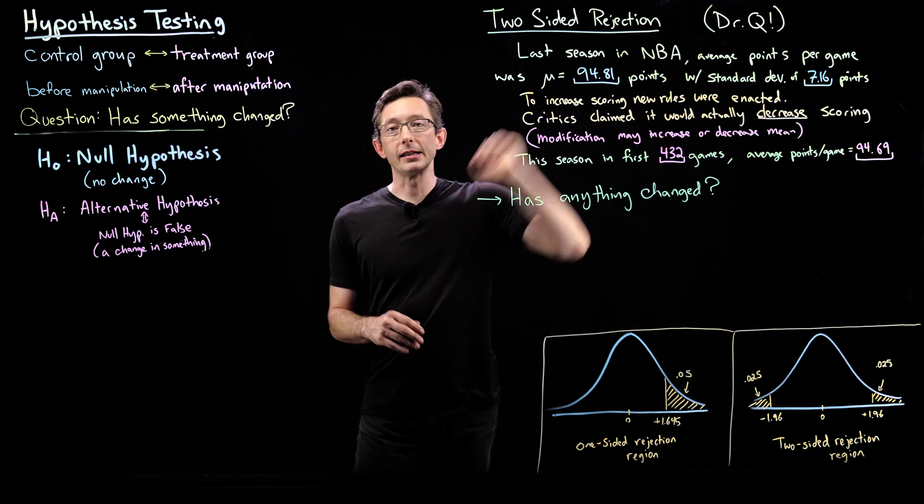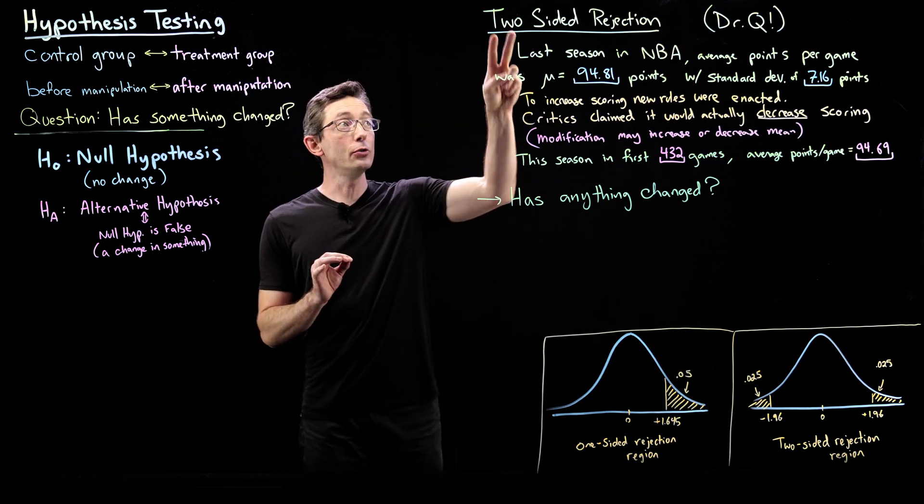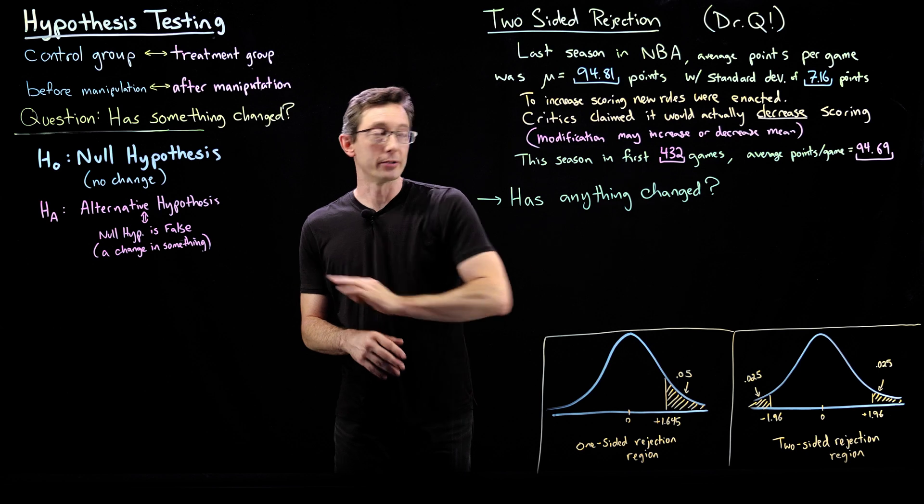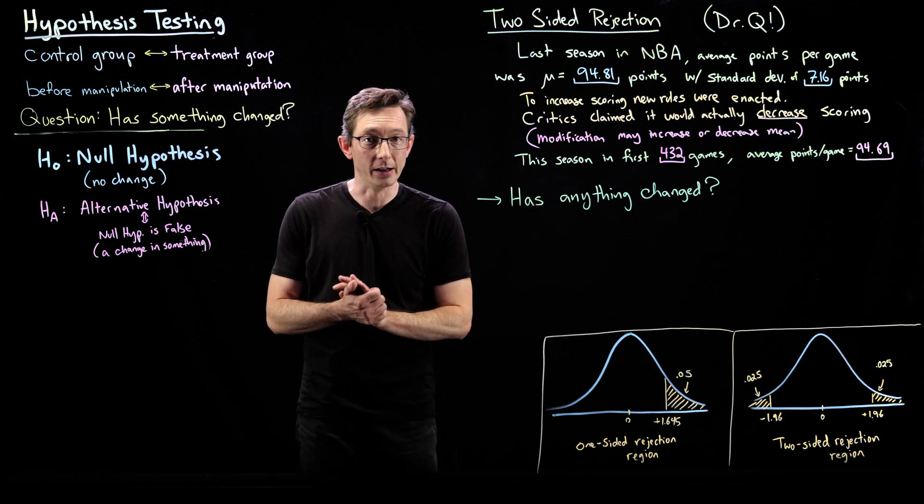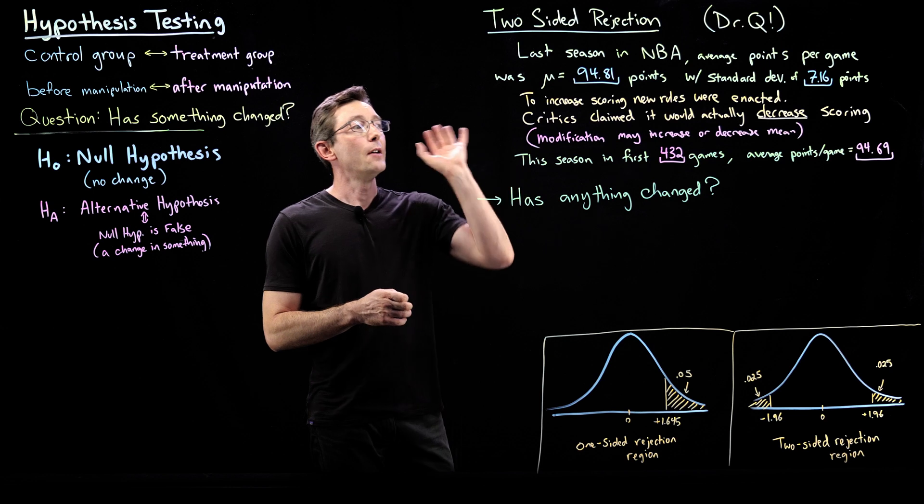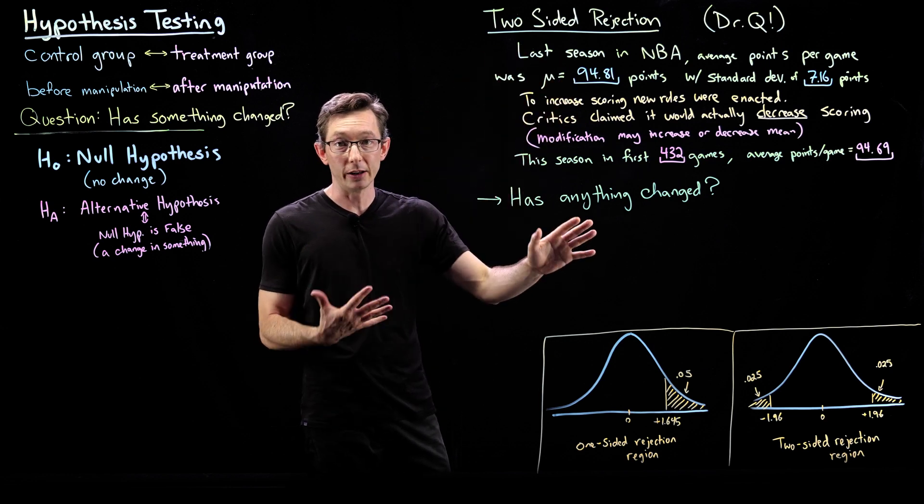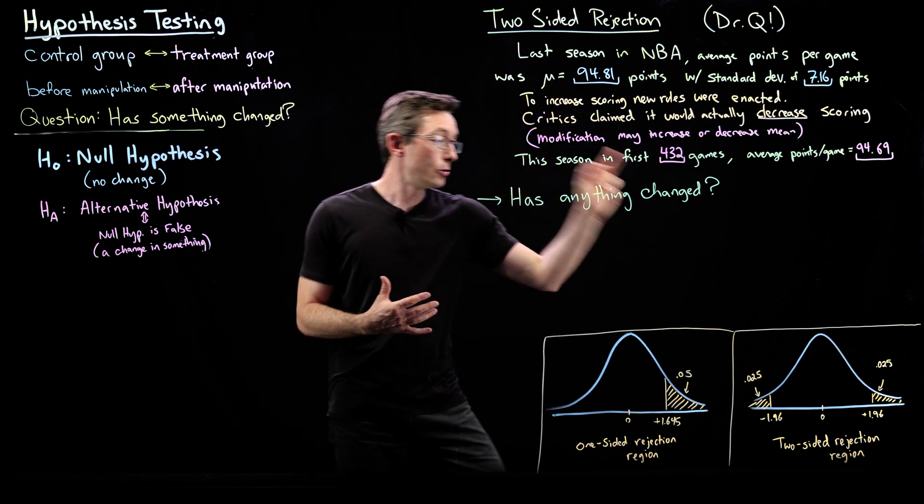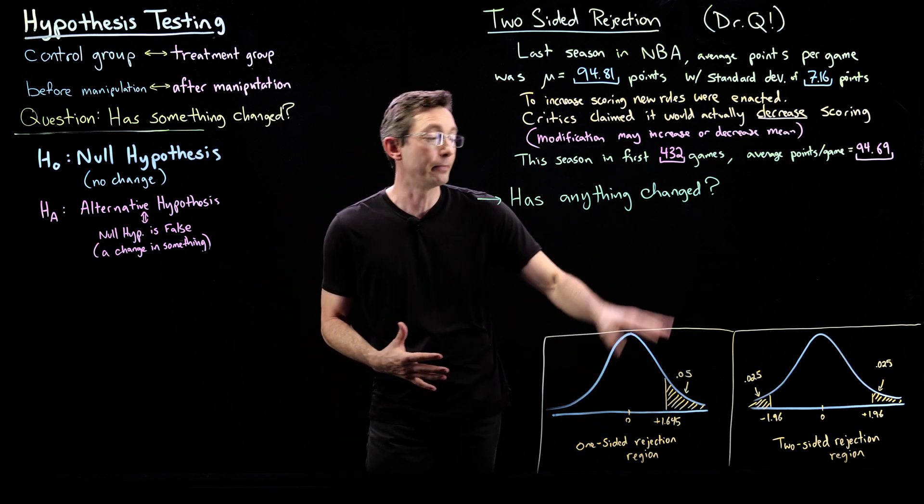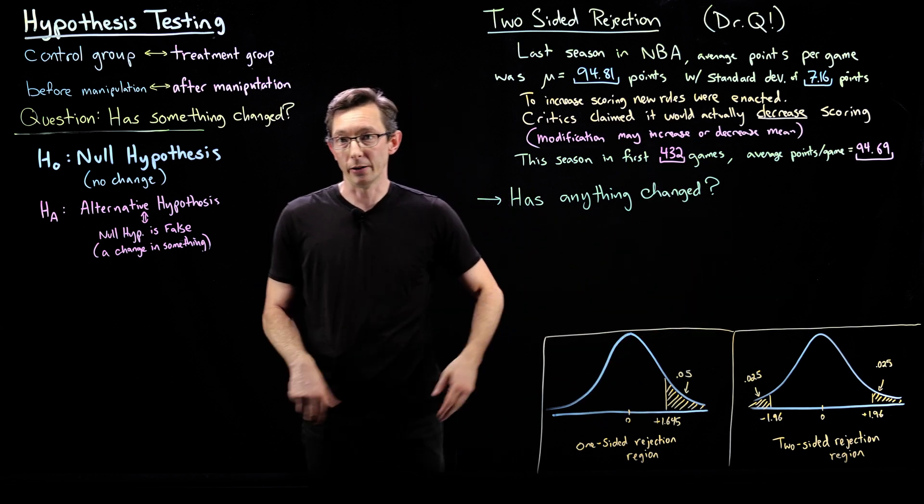I have a really nice example of a two-sided rejection region test that I learned 20 years ago when I was taking Dr. John Quintanilla's class at University of North Texas. I'm going to walk you through this cool example of a two-sided rejection region hypothesis test. We've done a lot of examples of one-sided rejection regions, let's do a two-sided region.